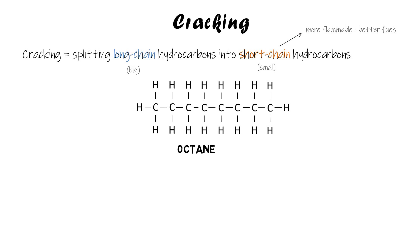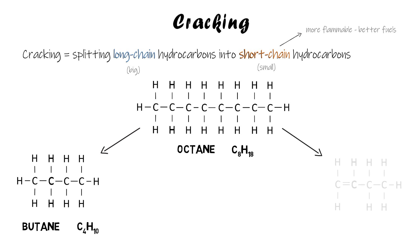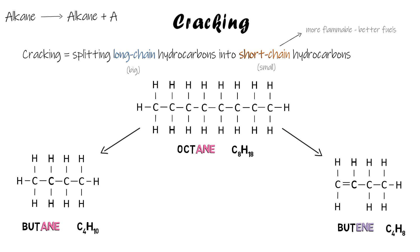This one is octane — it has eight carbons and its formula is C8H18. If we perform cracking on octane, it can split up in a number of ways, but in this scenario it splits into butane, which has four carbons, and butene, which is what's left over. So we've taken one long-chain hydrocarbon and split it into two shorter-chain hydrocarbons.